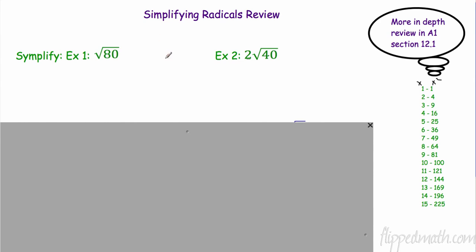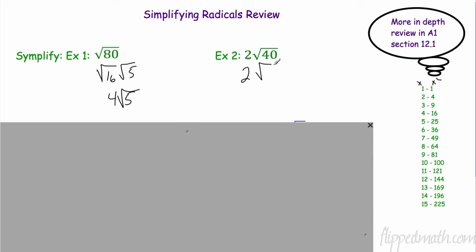We can't have any perfect square factor under the radical. 80 is not perfect — 81 is — so we look for factors of 80 that are perfect squares: 64? No. 49? No. 36? No. 25? No. 16? Yes. So this is 16 times 5. Since 5 is not a perfect square we leave it, giving us 4 radical 5. For 2 radical 40, the largest perfect square factor of 40 is 4, so that becomes 2 times the square root of 4 times the square root of 10, which is 2 times 2 radical 10, equaling 4 radical 10.